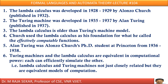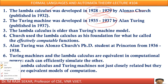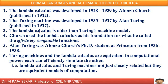Lambda calculus was introduced by Alan Joe Church and was developed in the years 1928 to 1929, then published in 1932. The Turing machine was developed between 1935 and 1937. If you observe these two dates, lambda calculus was introduced first. Therefore, lambda calculus is older than the Turing machine model.